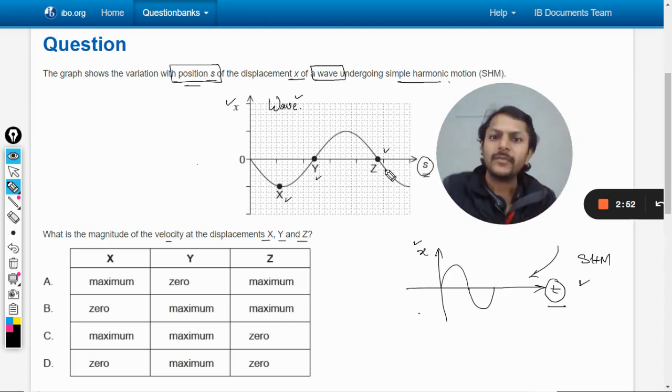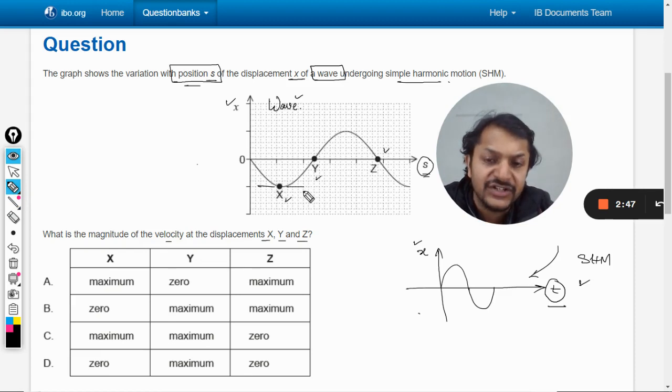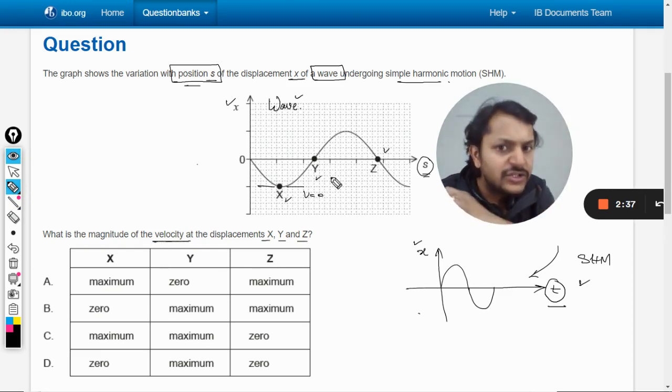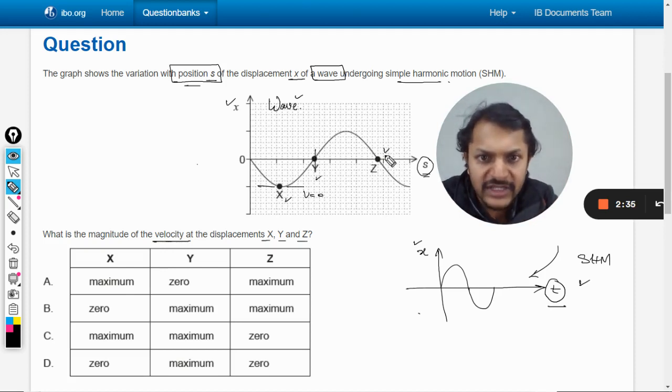X becomes the extreme position. Obviously, at the extreme positions, the velocity will be zero. And at this position, these are the two mean positions, and the velocity at the mean position will be maximum in the case of SHM. So it's very clear and straightforward that at points Y and Z, the velocities will be maximum, and at X, the velocity will be zero.